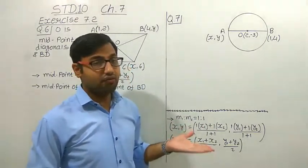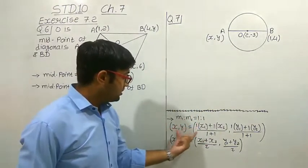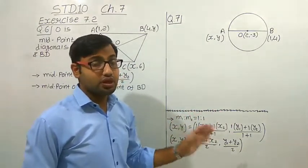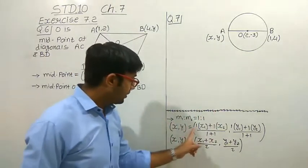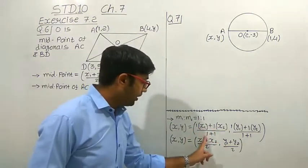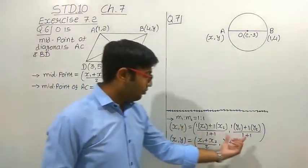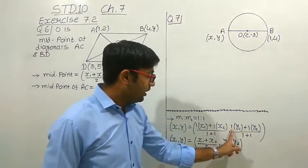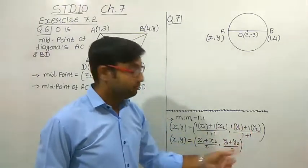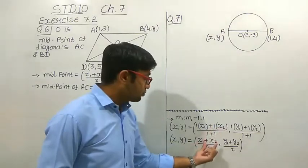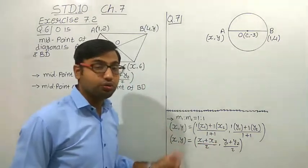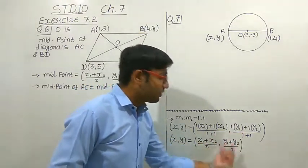So what is the formula we get for the midpoint? We use M2 × X1 + M1 × X2 upon M1 + M2. Now in place of M1 and M2 we put 1. So we get 1·X1 + 1·X2 upon 1 + 1, which simplifies to X1 + X2 upon 2. In the same way, the Y coordinate is Y1 + Y2 upon 2.